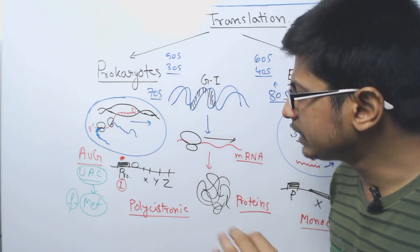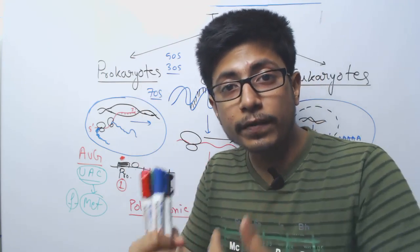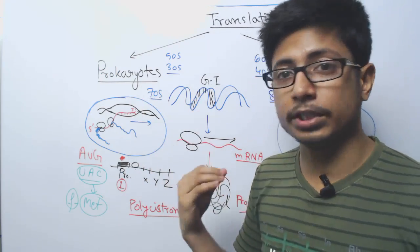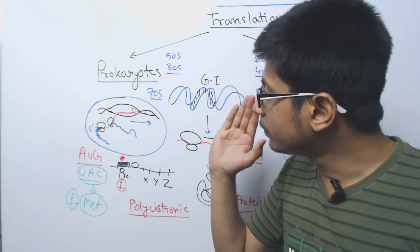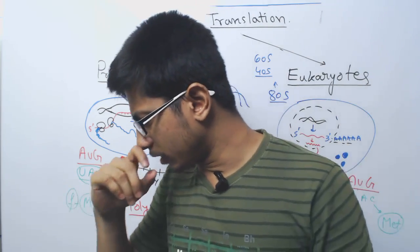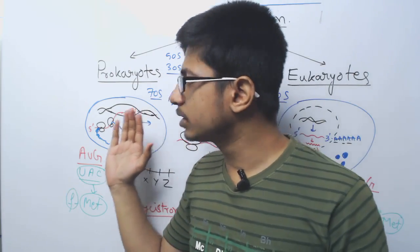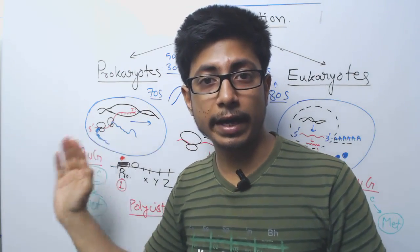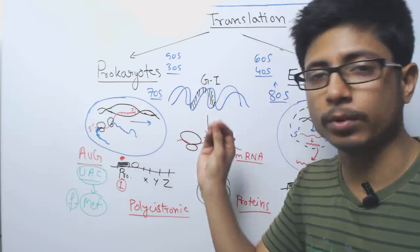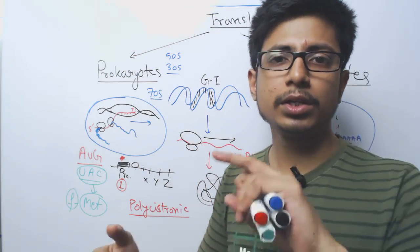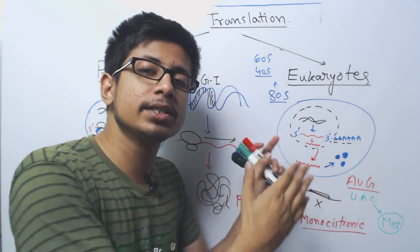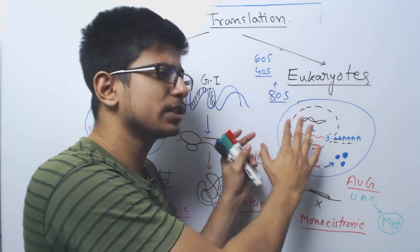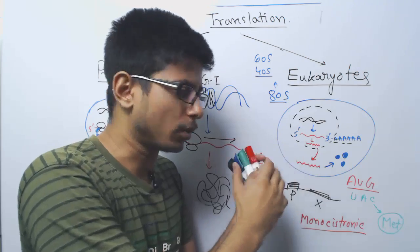In the initiation phase, we need different factors, protein factors playing important roles in translation process, both in prokaryotes and eukaryotes. In prokaryotes we have three different initiation factors required, initiation factor 1, 2 and 3. While in eukaryotes we need nine such initiation factors to begin with, because it is much more complicated here.